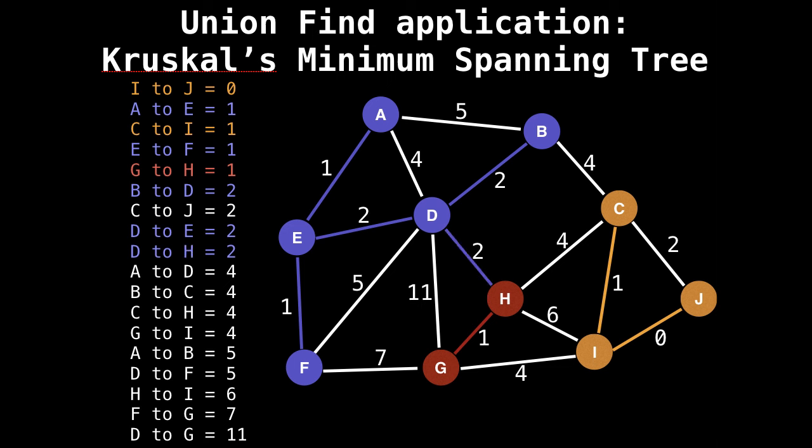Next edge would be D to H. H belongs to group red and D to purple. So merge the groups together. Let's say they both become group purple.